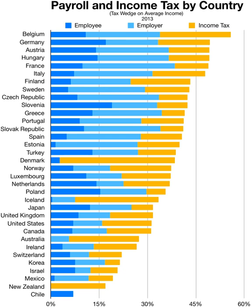Income of a corporation's shareholders usually includes distributions of profits from the corporation. Deductions typically include all income-producing or business expenses, including an allowance for recovery of costs of business assets. Many jurisdictions allow notional deductions for individuals and may allow deduction of some personal expenses. Most jurisdictions either do not tax income earned outside the jurisdiction or allow a credit for taxes paid to other jurisdictions on such income. Non-residents are taxed only on certain types of income from sources within the jurisdictions, with few exceptions.